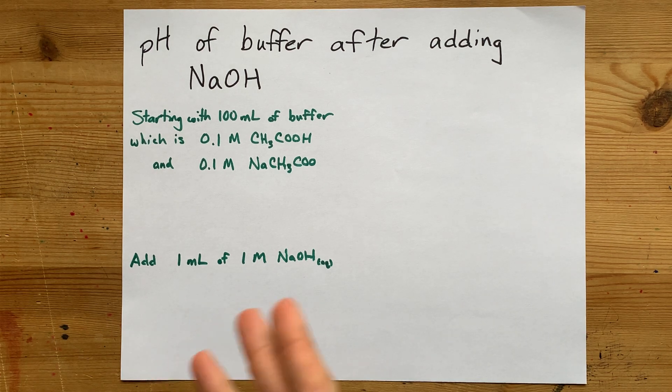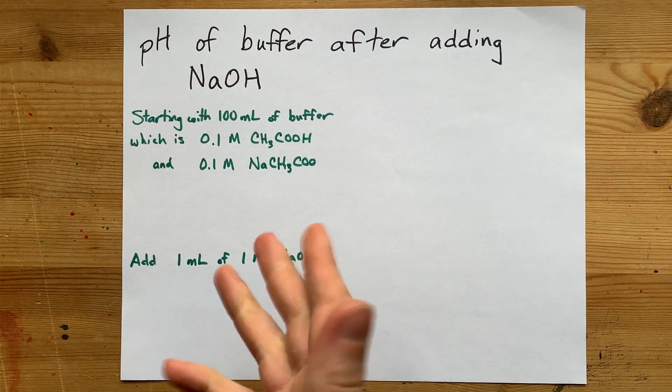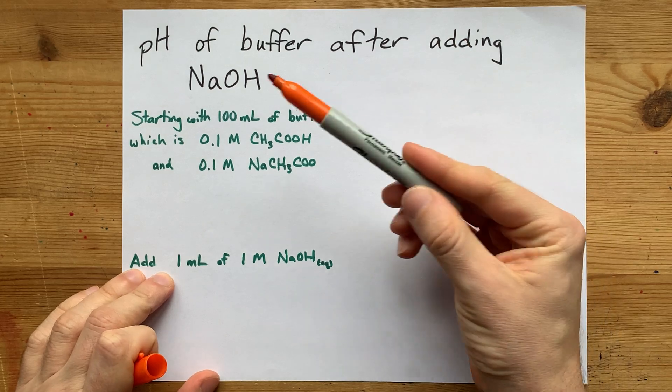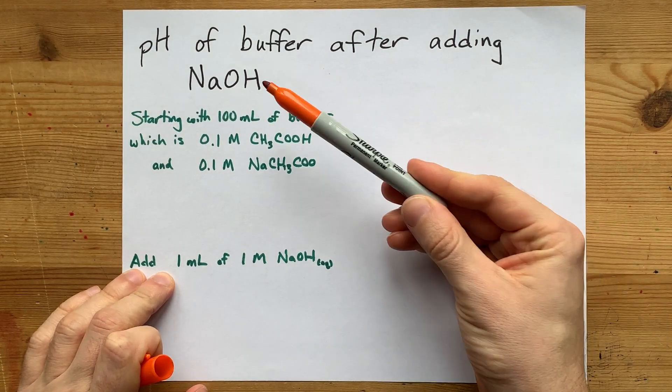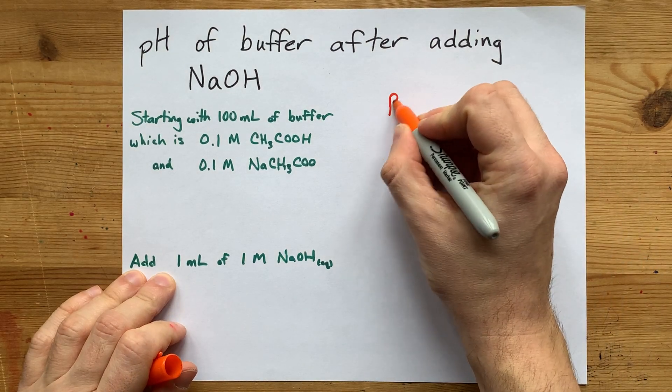How does the pH of a buffer change when you add a small amount of sodium hydroxide or strong base to it? The answer is that the pH is going to go up because you are adding strong base, but not by as much as you probably expect.